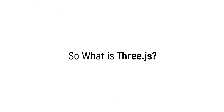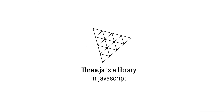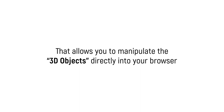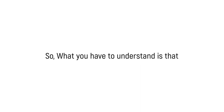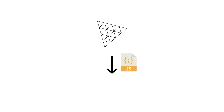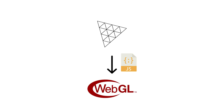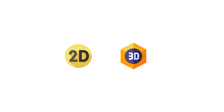So what is Three.js? Three.js is a JavaScript library that allows you to manipulate 3D objects directly in your browser. Three.js via JavaScript allows you to use WebGL in an HTML5 canvas. WebGL is a JavaScript API that allows you to create 2D and 3D graphic rendering.